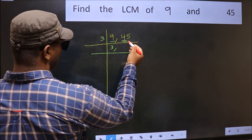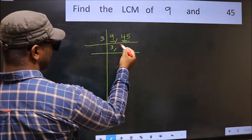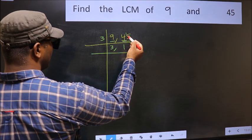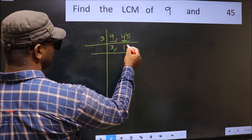Dividing 9 by 3 gives 3. For 45, when do we get 15 in the 3 table? 3 times 5 is 15.